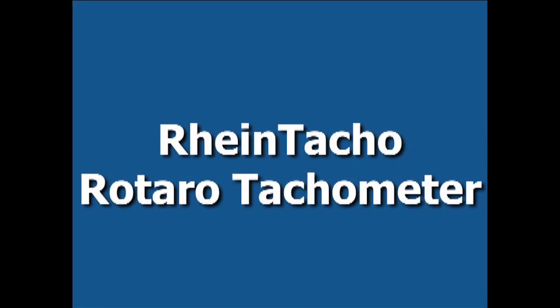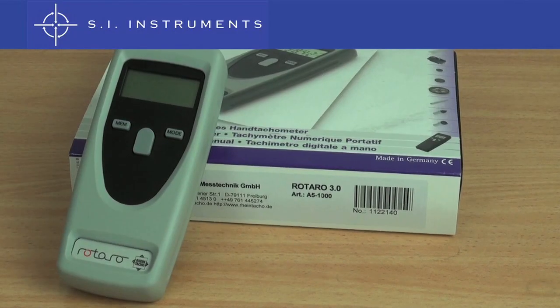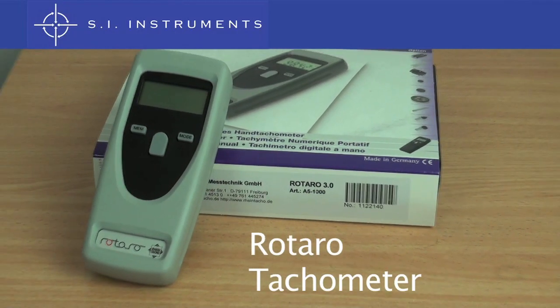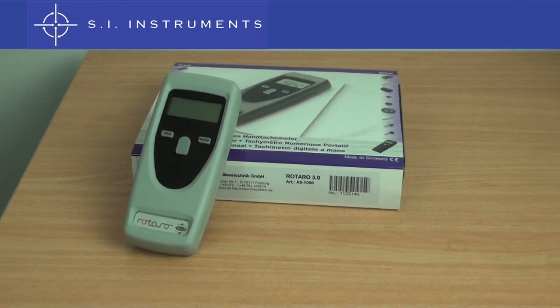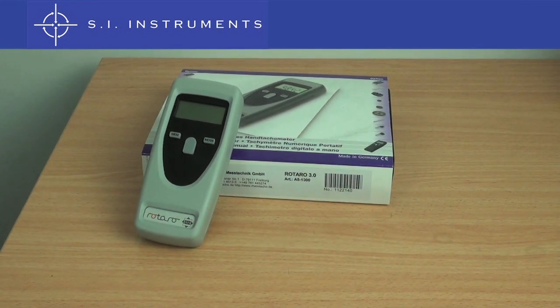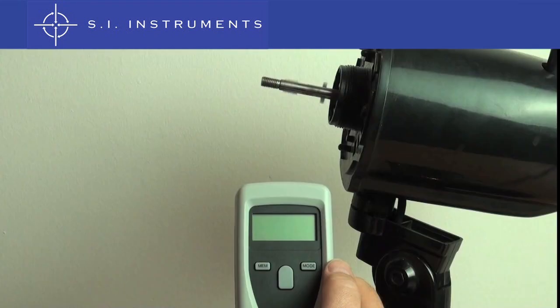The handheld Rotaro tachometer from Rhynteco accurately measures rotational or surface speed as well as length. The Rotaro features dual measurement modes: optical and mechanical.